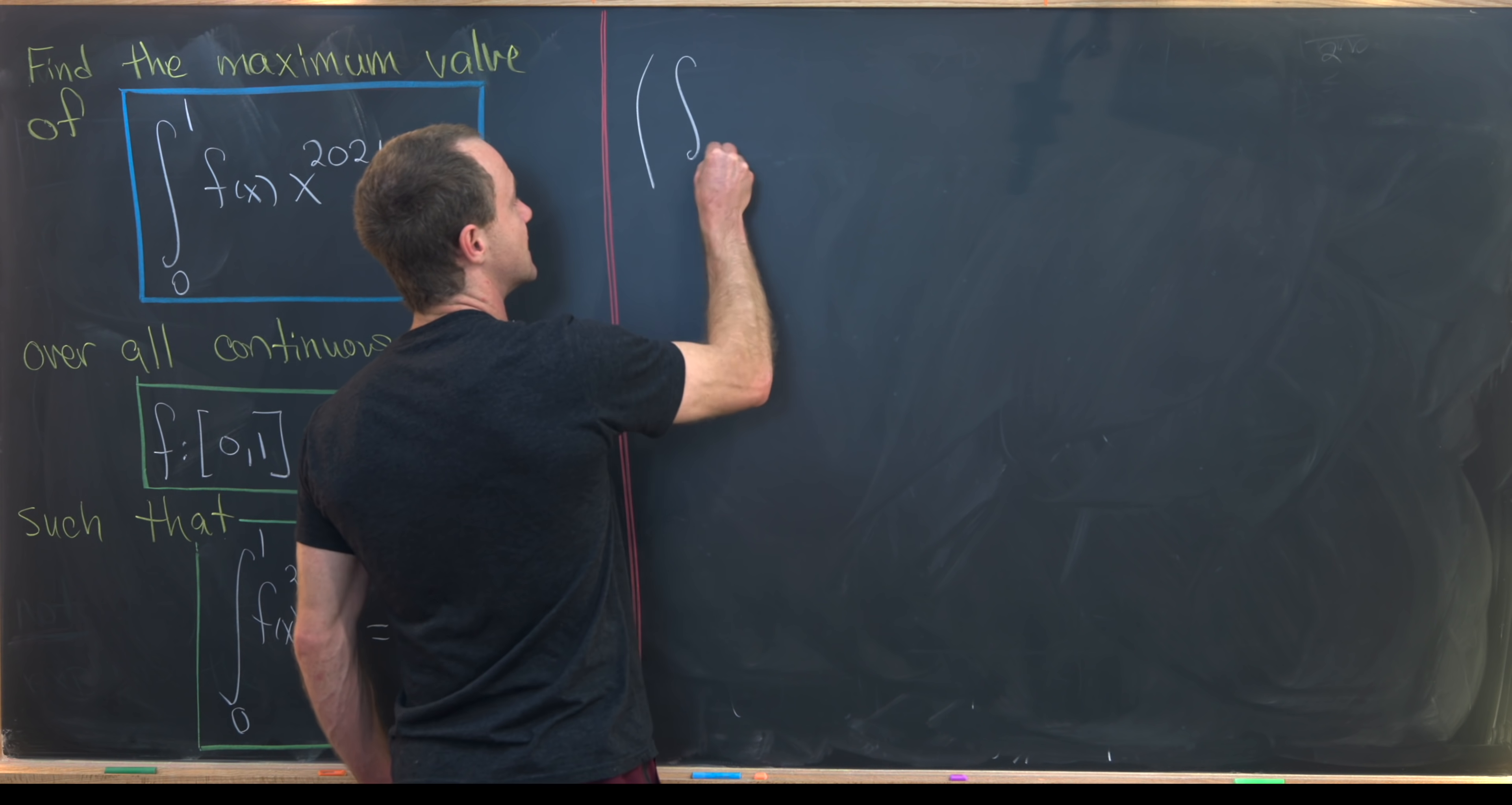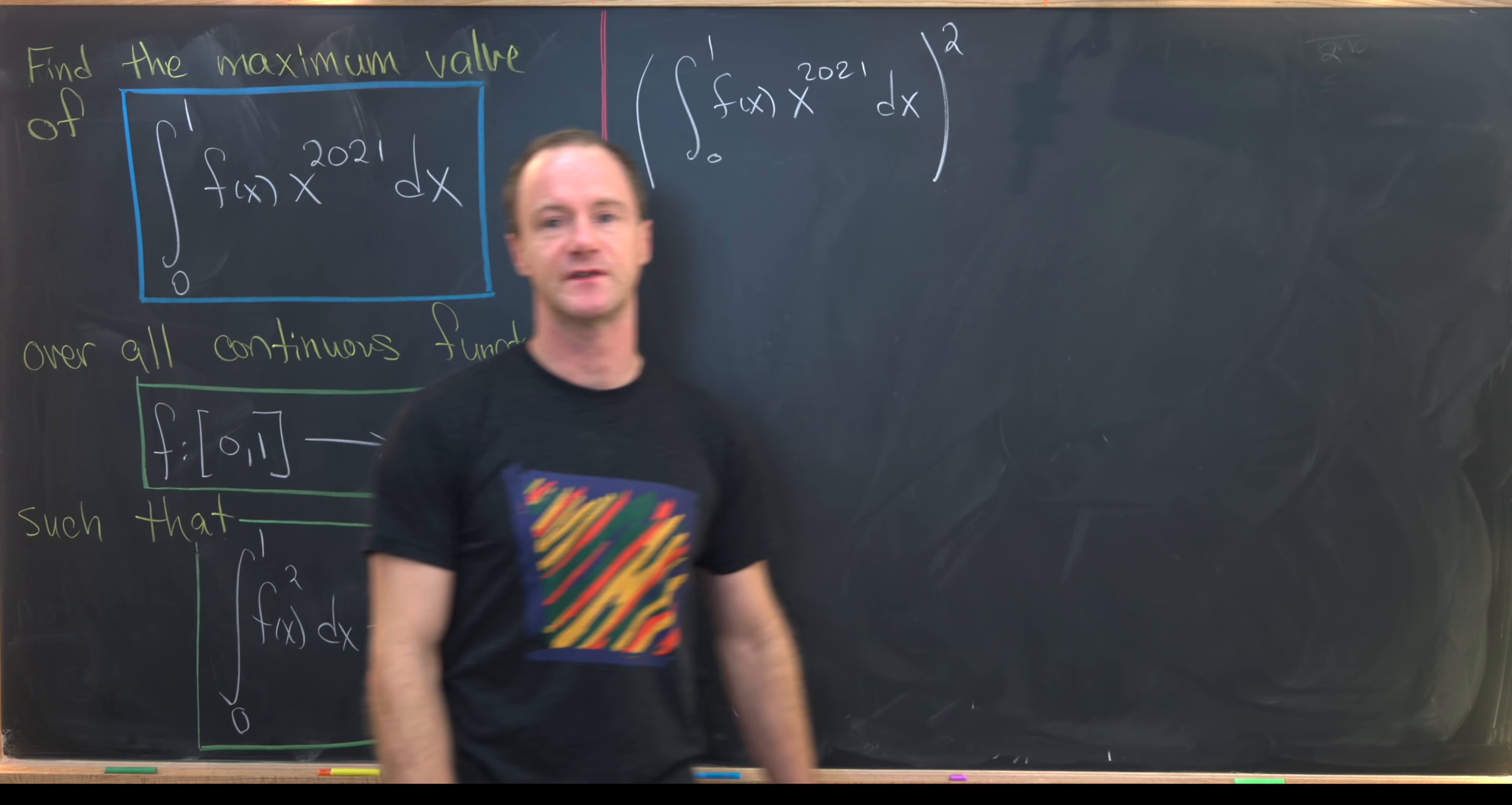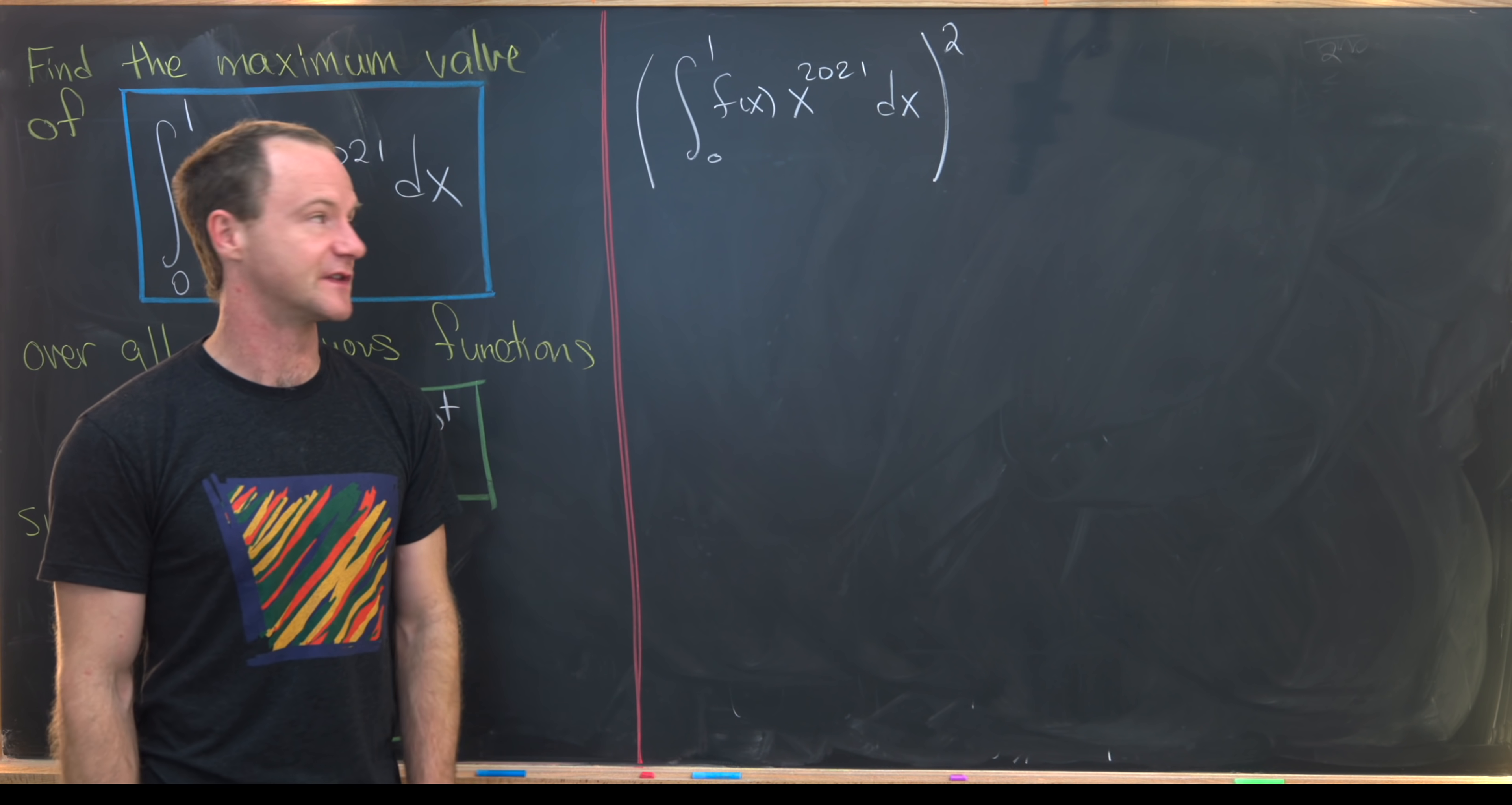So we'll take the integral from 0 to 1 of f(x) times x to the 2021 dx and then square it. From here we want to somehow split this apart so we've got the integral from 0 to 1 of just f squared without the x to the 2021. There is a way to do that immediately with the Cauchy-Schwarz inequality for integrals. But instead of using that, let's kind of semi-derive a version of that identity just for this problem.